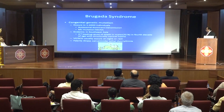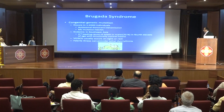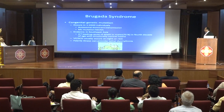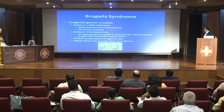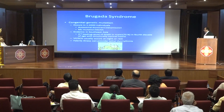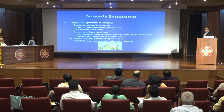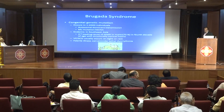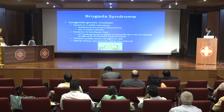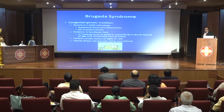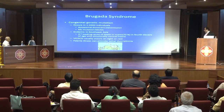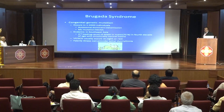Brugada syndrome: the most common mutation is SCN5A. It is endemic in Southeast Asia and is the second leading cause of death in males, with 70% of events occurring in the 4th decade. Ventricular fibrillation or sudden cardiac death usually occurs at night or during rest, and febrile illness can provoke lethal dysrhythmias.